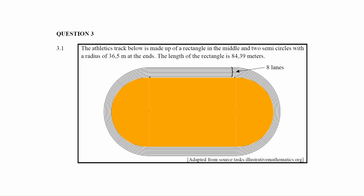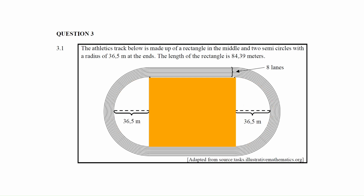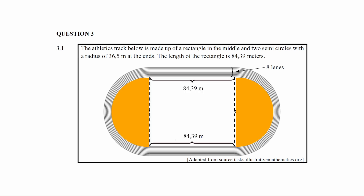To solve this, we first calculate the total area of the inside field of the track, then divide the total cost of 11,900 by the total area to find the cost per square meter. The total area is made up of the rectangular section and the two semicircle sections, which can be combined to form a full circle.